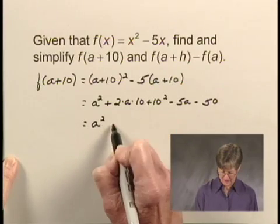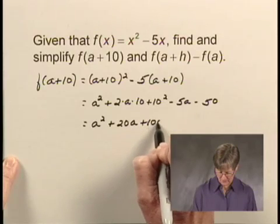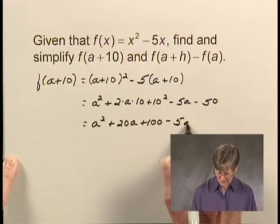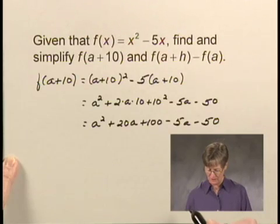Let's simplify what we have here. We have a squared, 2 times a times 10 is 20a, 10 squared is 100, and then we have minus 5a minus 50. Now we need to see if we can collect like terms.